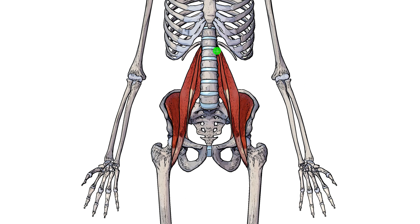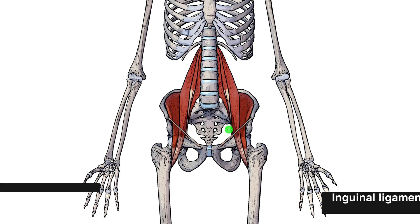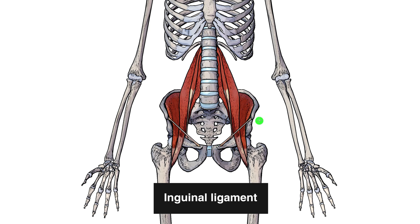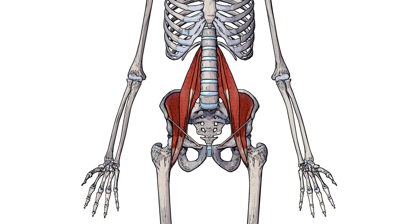Another thing you'll notice about the psoas minor muscle here is that it's more superficial than the psoas major and the iliacus — superficial meaning closer to the skin surface. So the psoas major and the iliacus are both deep to the psoas minor muscle. Another major landmark to look at is the inguinal ligament here, which I've just brought into the picture. You'll notice all of these iliopsoas muscles are deep to the inguinal ligament.